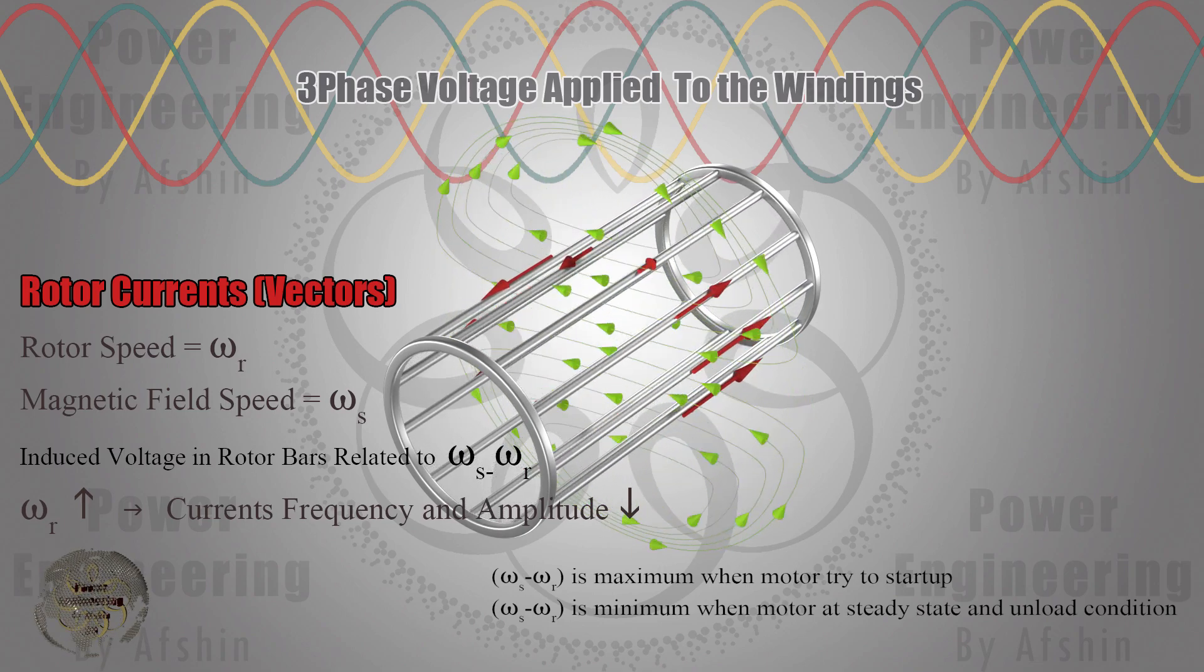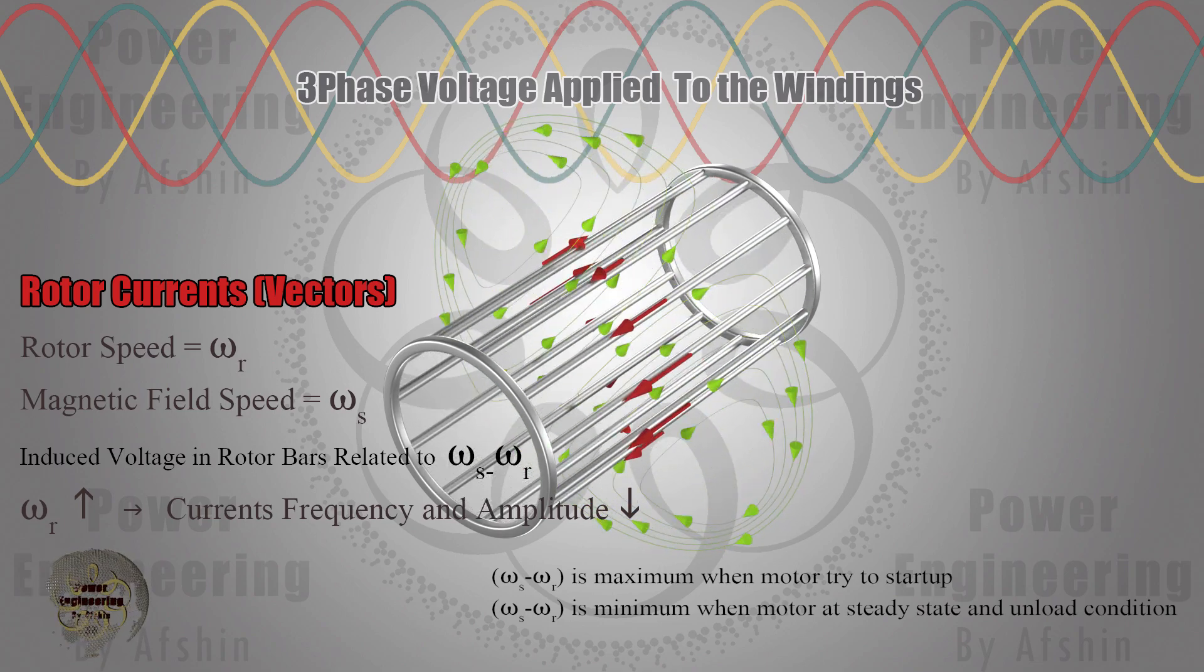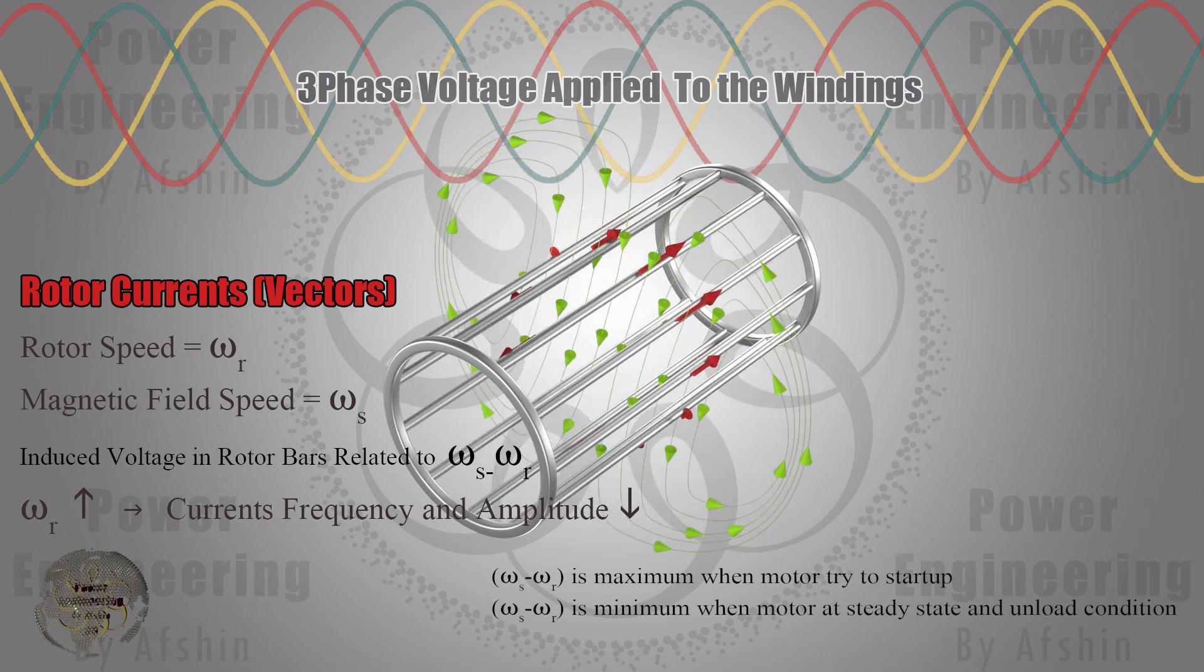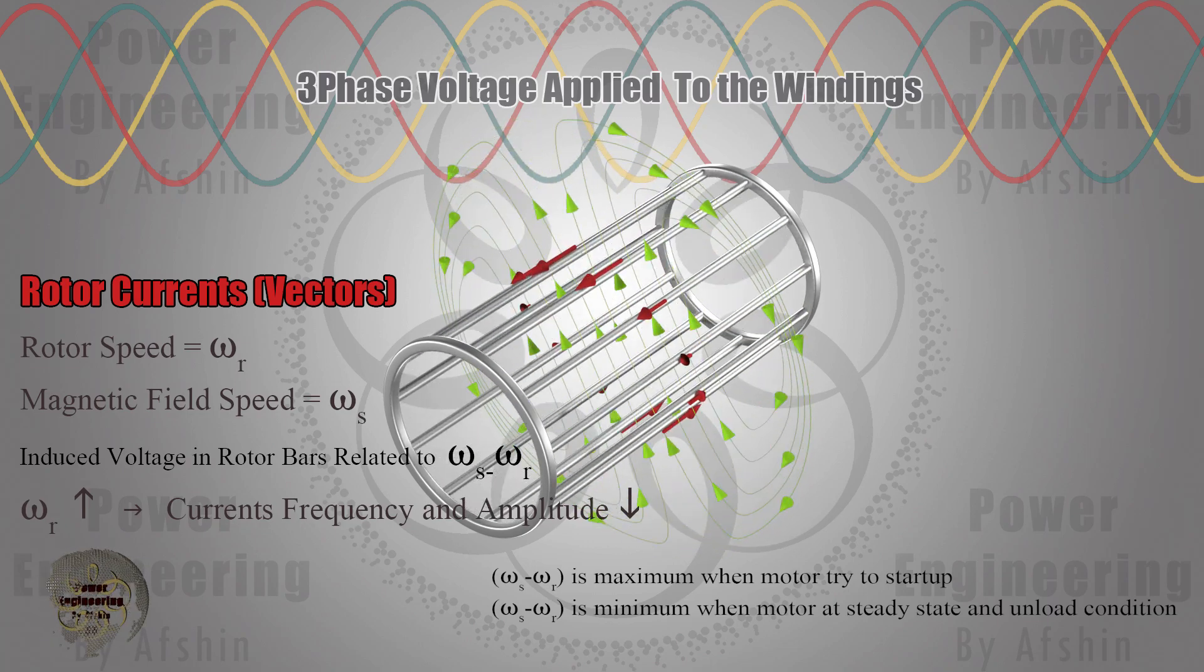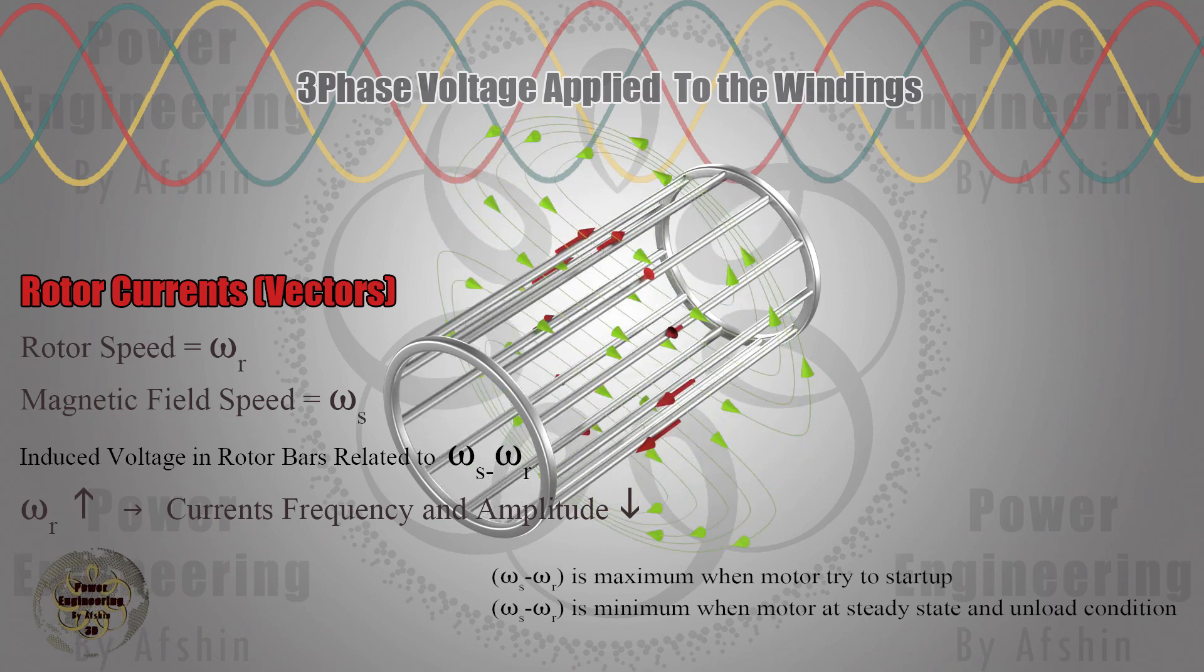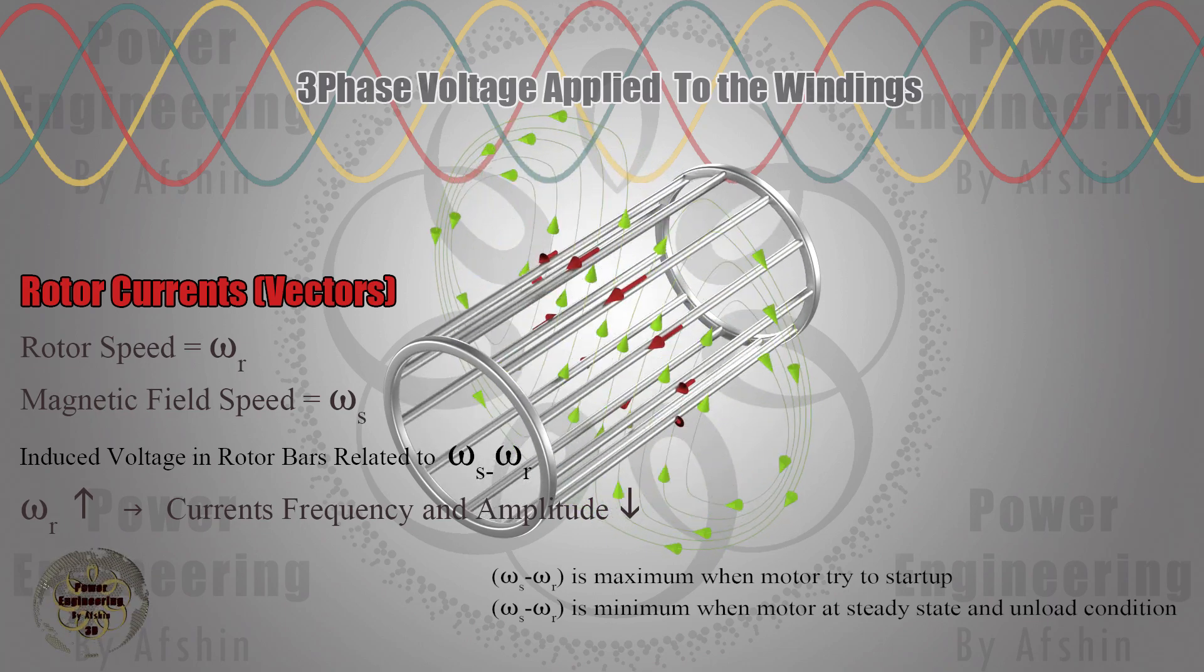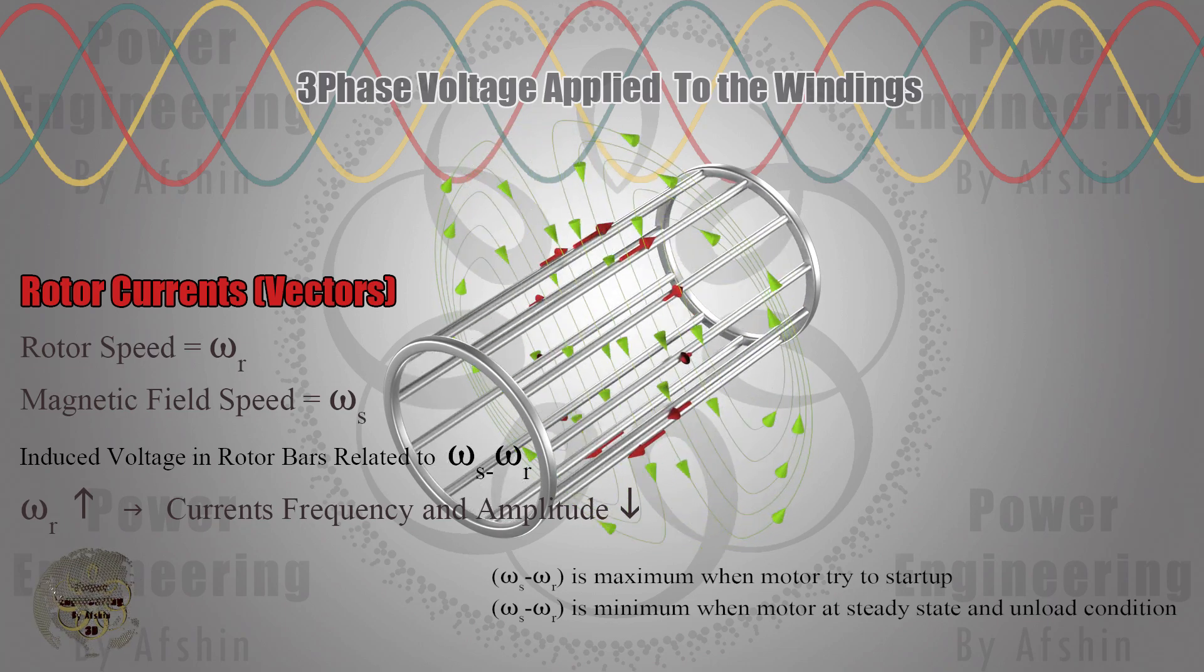If the rotor were locked in place, it would experience maximum induced voltage, which is why starting current is also called locked rotor current. However, as the rotor starts rotating, it senses a lower frequency or slower flux change, gradually reducing the current.